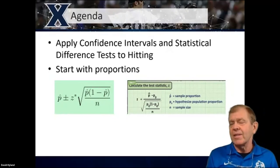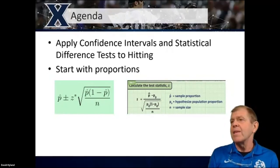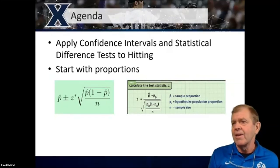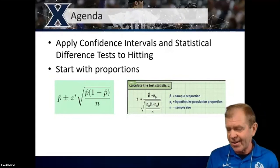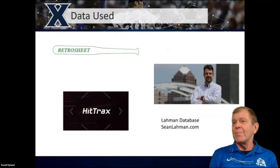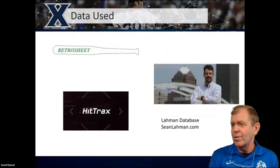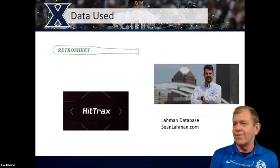We're going to apply confidence intervals and statistical difference tests, mostly focusing on hitting. The idea is to get you to think about how to take these concepts from your statistics class and apply them in a baseball setting, once you've collected data from some of the sources covered in earlier presentations. The data I'm going to use is from the Lahman database. I probably couldn't teach my course without Sean Lahman's database, so it was really cool to see him as the first presenter of the day.